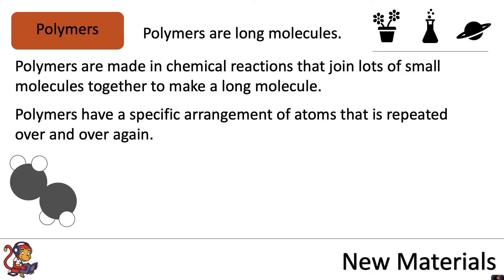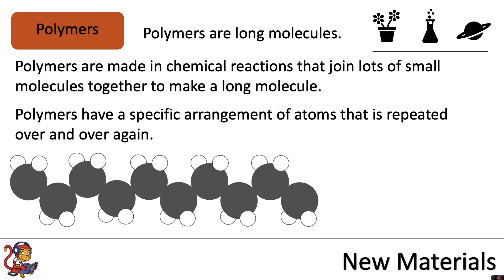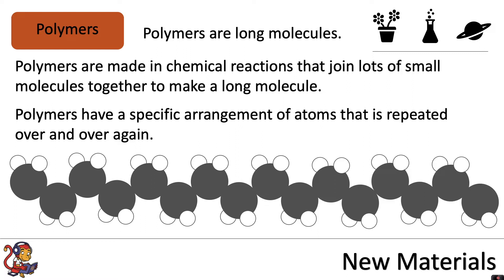For example, if we started off with a small unit of atoms, to make a polymer we'd have to join lots of those up in one long chain of repeated units.